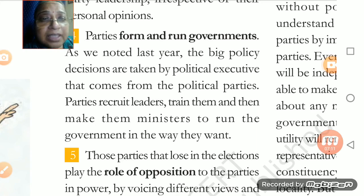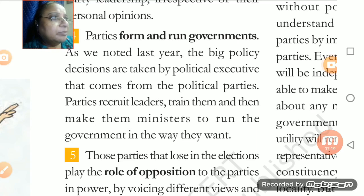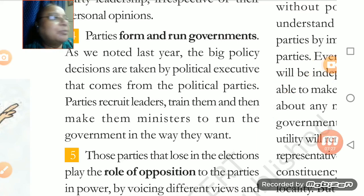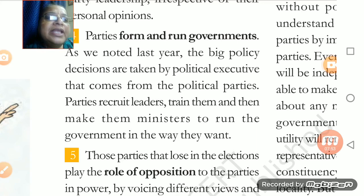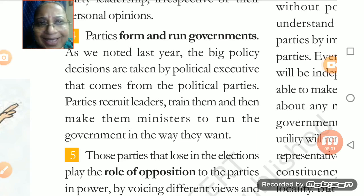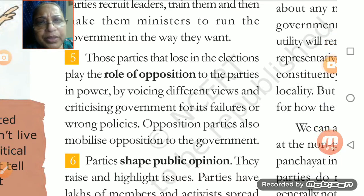There is no formal institution where leaders go for training. They are always active members of the party — they see how the party can become popular and that is how policy decisions are made. When parties are recruiting leaders, the younger members are always trained by the senior members, who take the responsibility of training them. After that, they make them ministers and run the government the way they want.